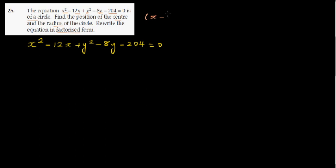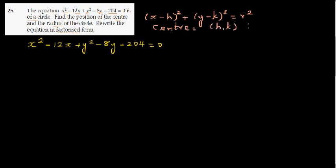To write this in standard form — the standard form of a circle is: (x minus h) squared plus (y minus k) squared equals r squared. This is the standard form of a circle with center (h, k) and radius r.